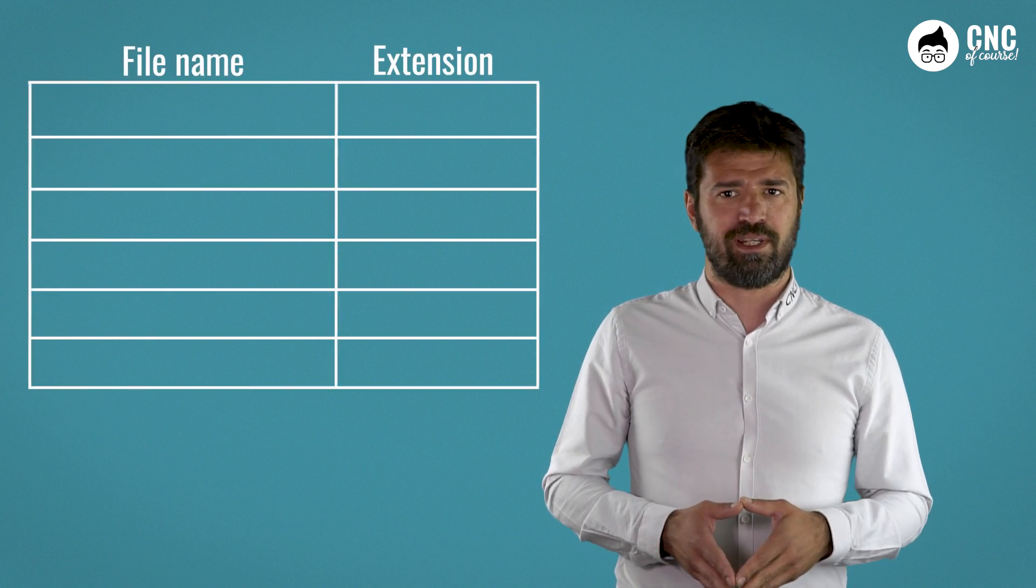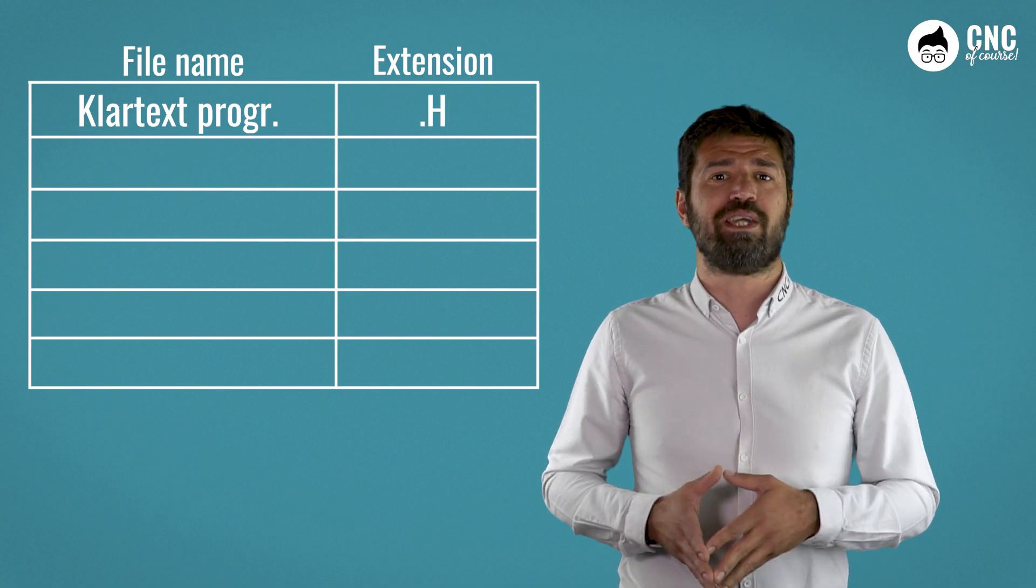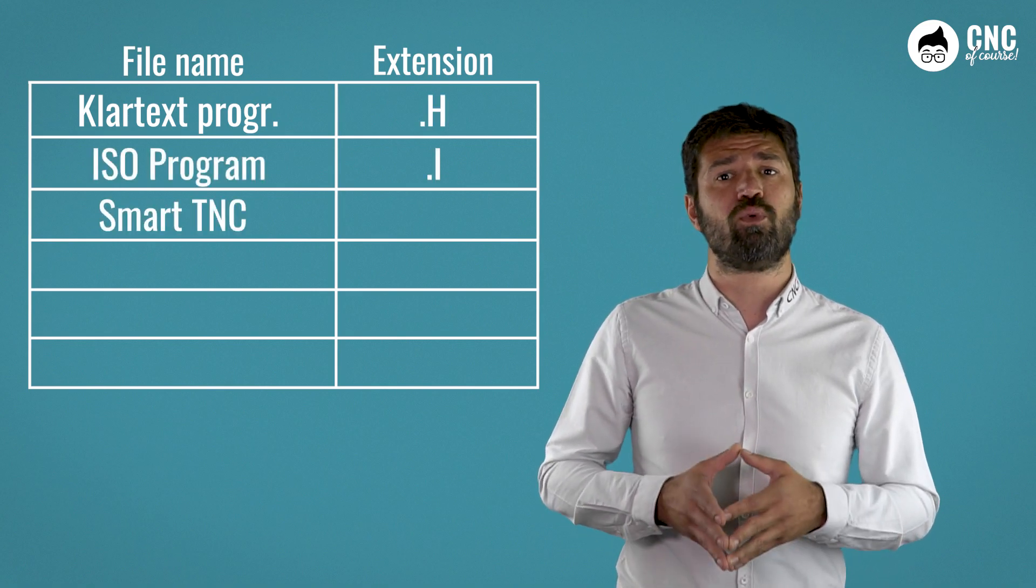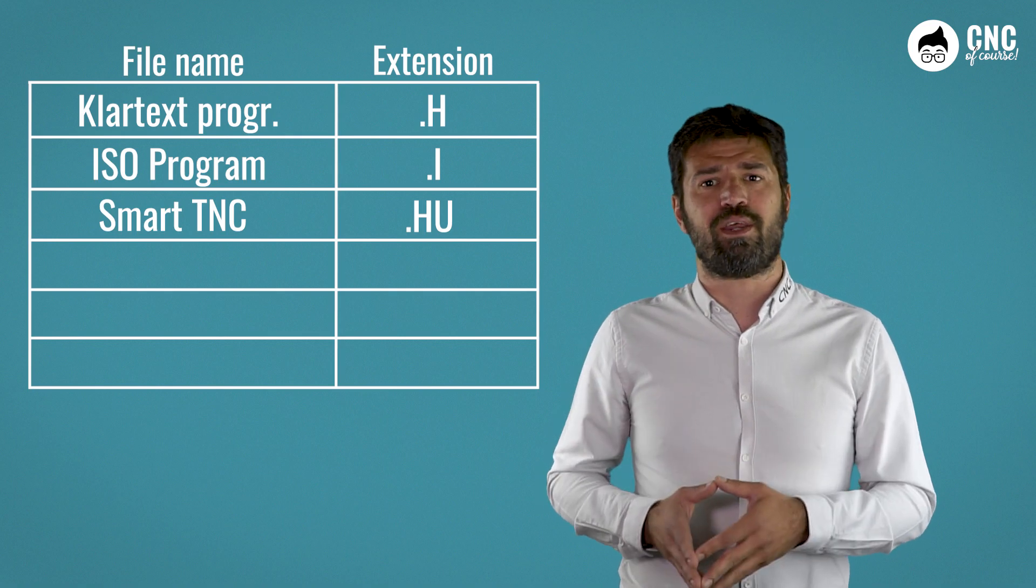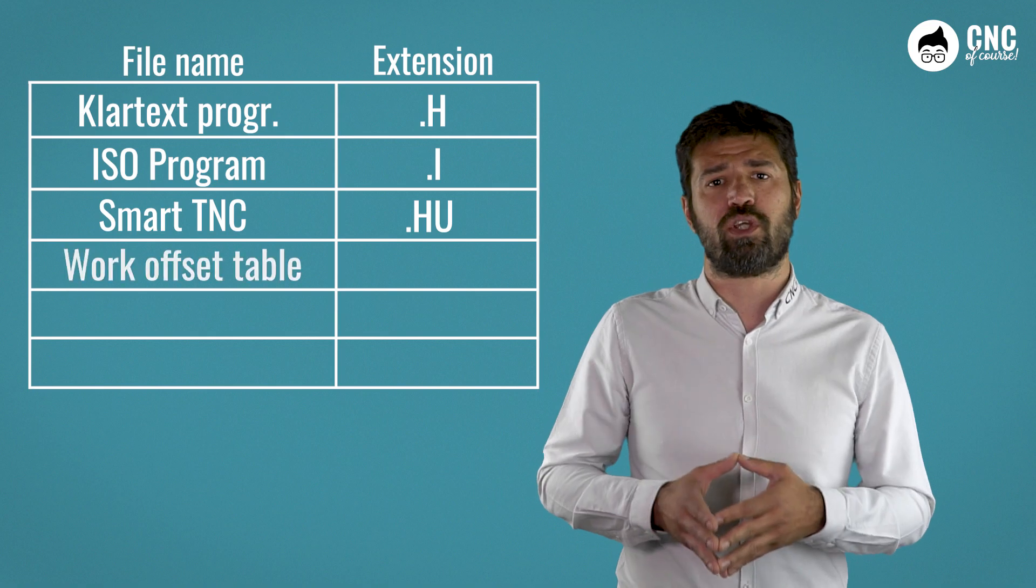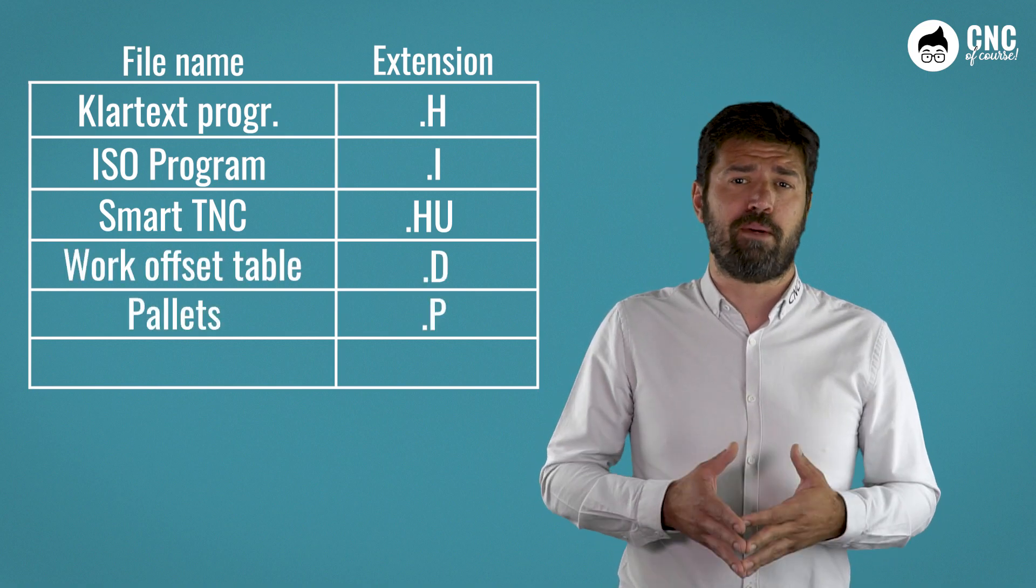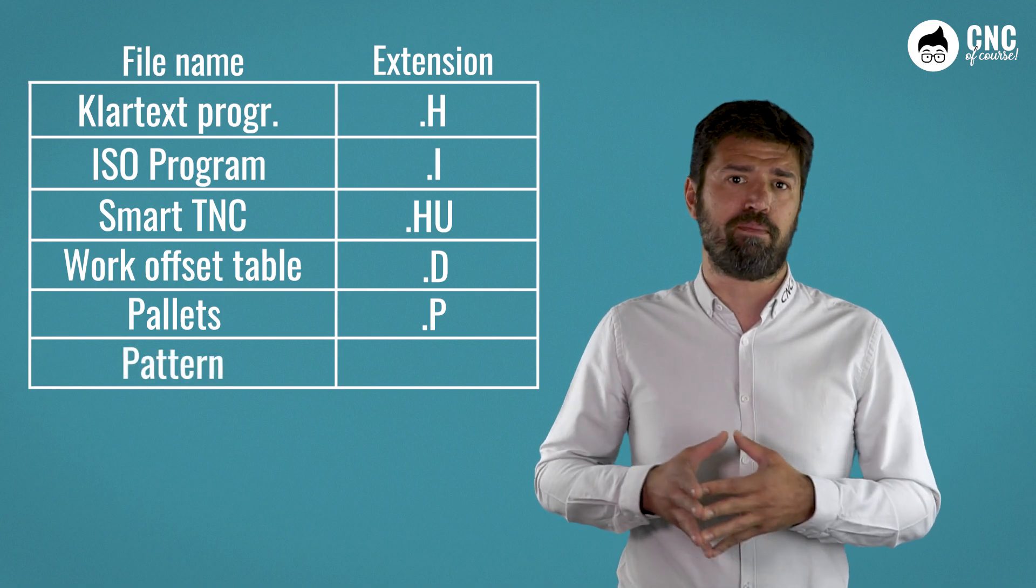Let's start by saying that each file has a name and an extension. A program written using Klartext programming will have the extension H, an ISO program I, a Smart TNC program HU. You can also create or import other types of files such as tables, a work offset table D, palettes P, or a point table also known as a pattern PNT.